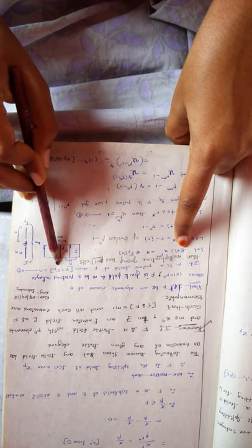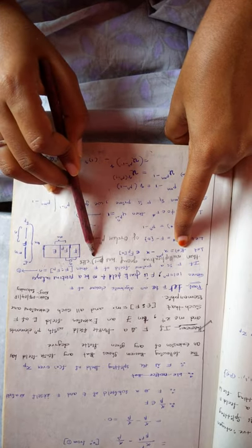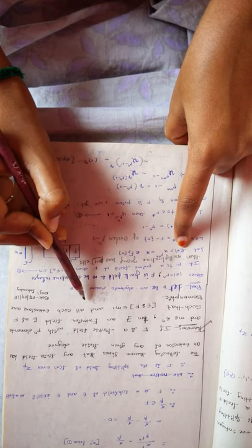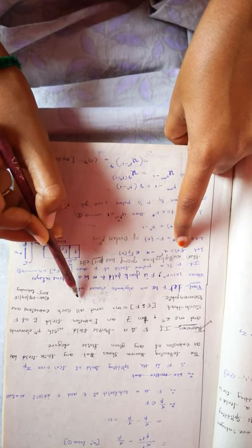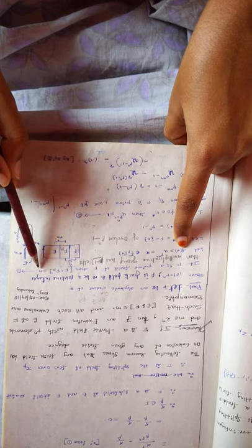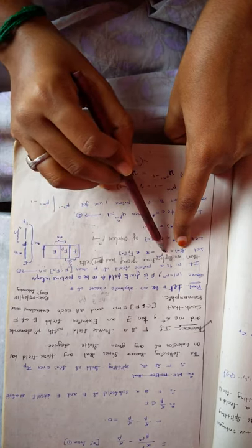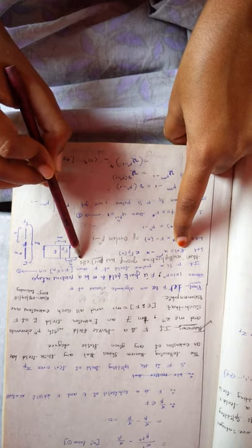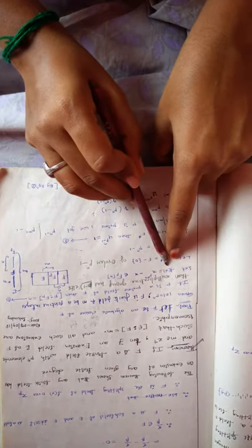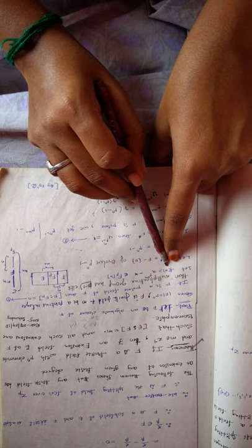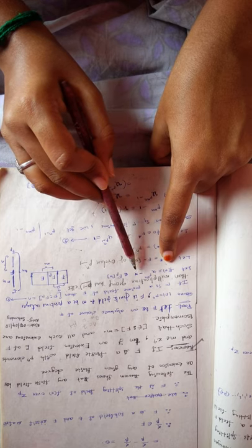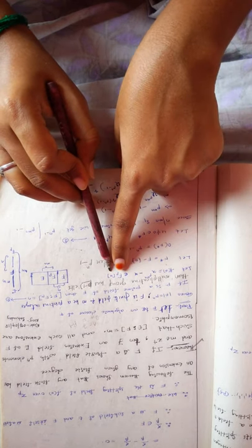The multiplicative group consists of p minus 1 elements. For example, if n equals 7, Z_7 consists of p minus 1 elements. Similarly, the dimension of F over F_p equals n elements, so the multiplicative group has p minus 1 elements. Next, we consider the polynomial: let f(x) = x^(p^n) - x, which belongs to F_p[x].